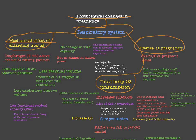The enlarging uterus in pregnancy will raise the diaphragm up about four centimeters above its usual resting position. As a result, we will have less negative intrathoracic pressure, because there will be less distance in the thorax for negative pressure.